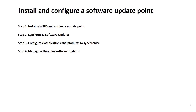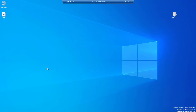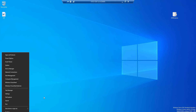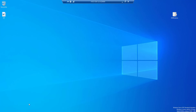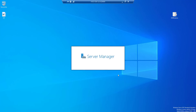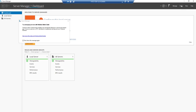Without wasting any time, let's jump on to the server and install the WSUS role first, then follow with the Software Update Point installation and configuration. We are on the WSUS server, so we'll click Start, go to Server Manager, and install the WSUS role.